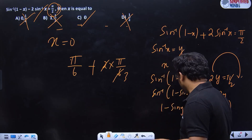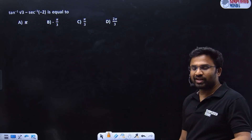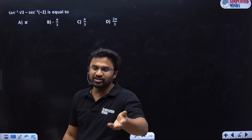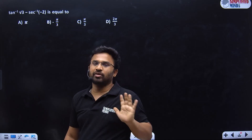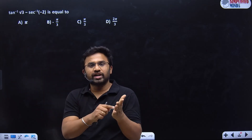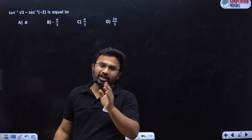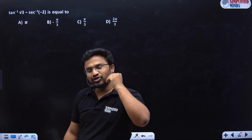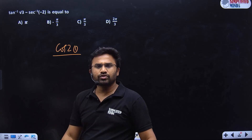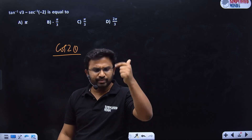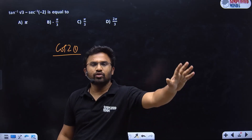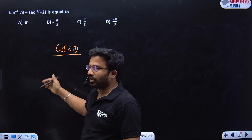I used to teach engineering mathematics. A very important formula is cos 2θ — you must know all its forms: cos²θ − sin²θ, 2cos²θ − 1, and 1 − 2sin²θ. Integration also uses all these forms. You have to write in terms of sin², cos², and tan². Let's go to the next question.